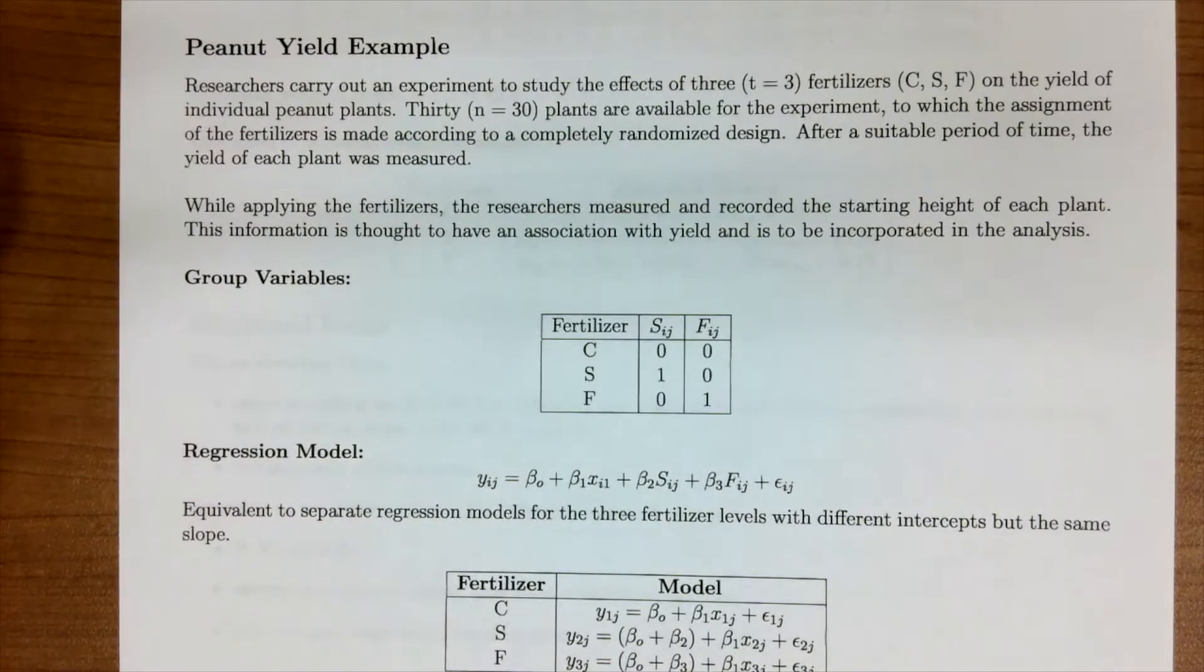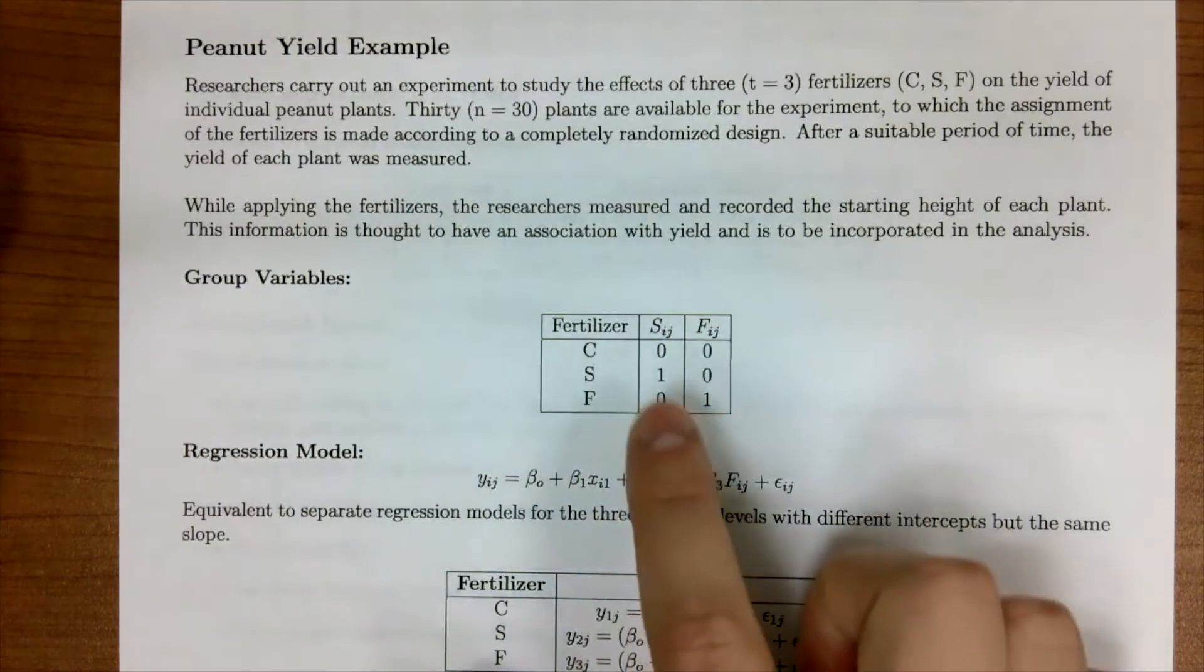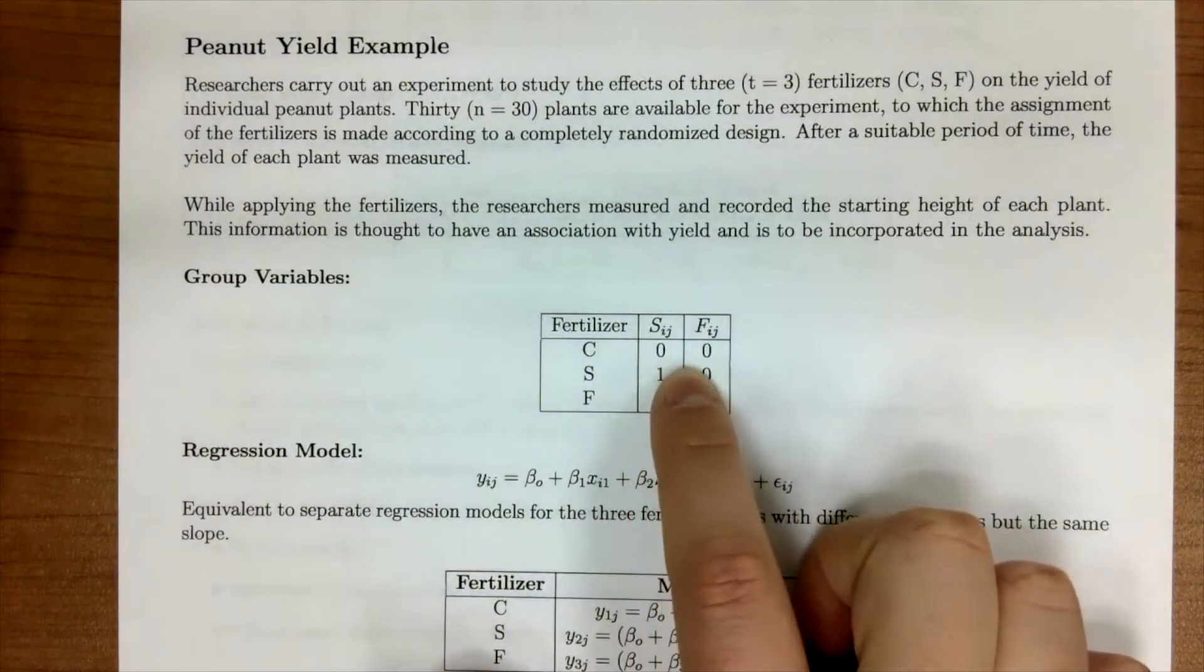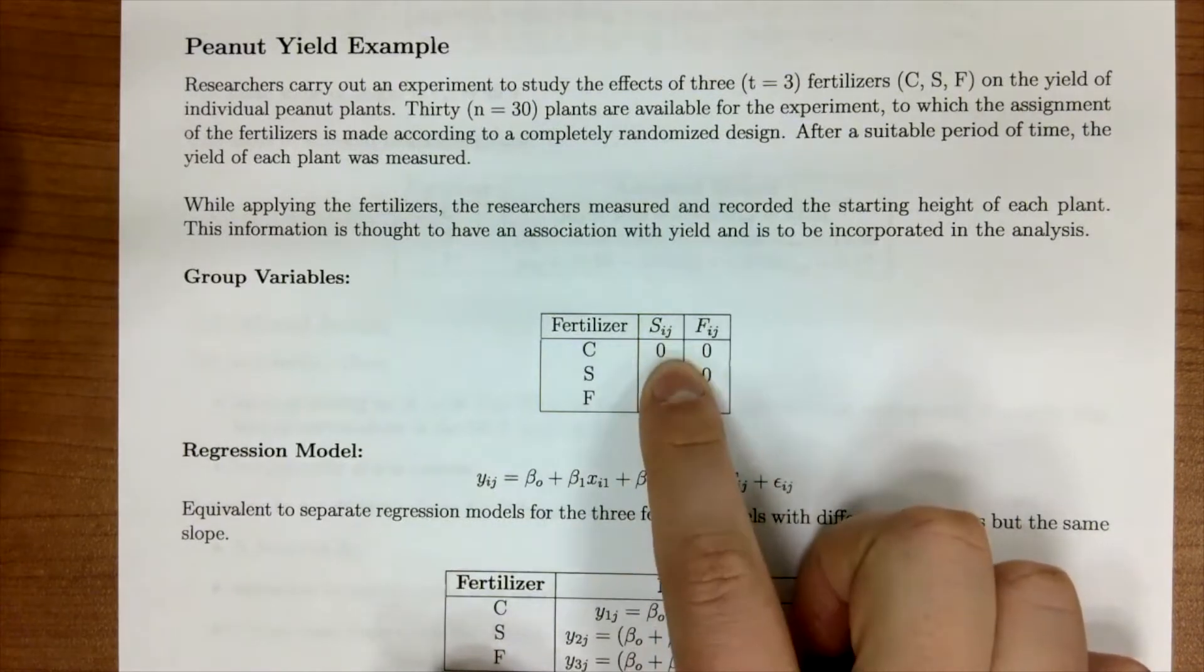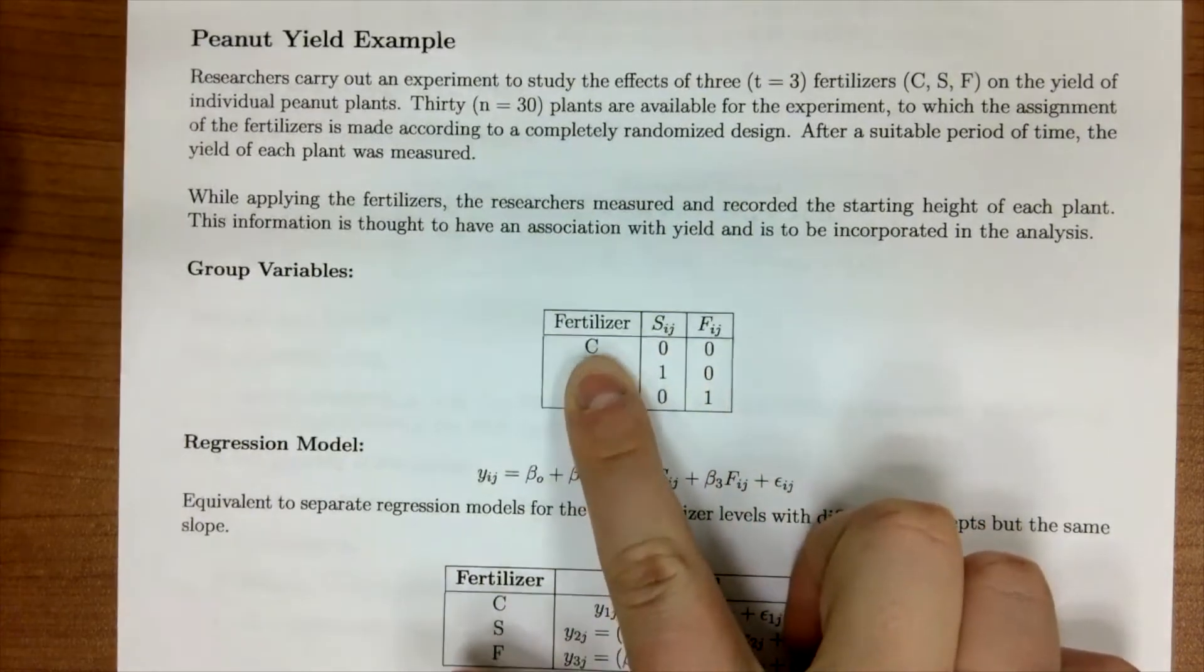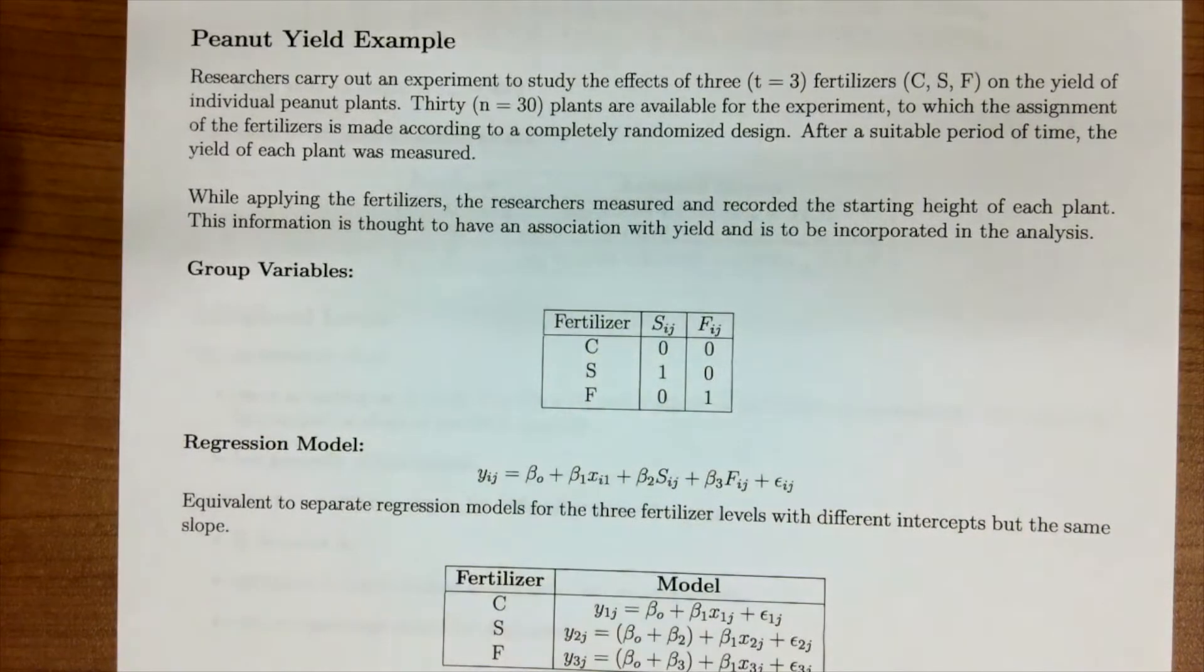A little intuition on why we only need two predictors for three levels is because with everything zeroed out, so this case, we know it's not an S and we know it's not an F, zeroed out puts us in C. So we only need two variables to represent three.